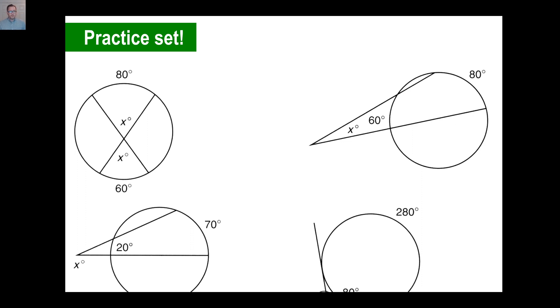All right, we'll do this one first. These intersect inside the circle, so you can look at 80 and 60 and go, what's the average, what's right in the middle of 80 and 60? The answer is 70, or you can go, intersect inside, 80 plus 60 divided by 2, that's 140 divided by 2, 70 degrees. There you go.